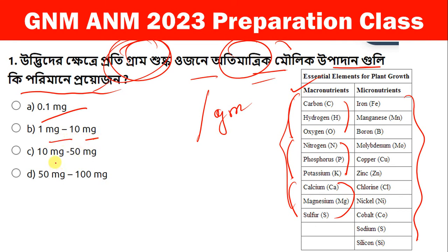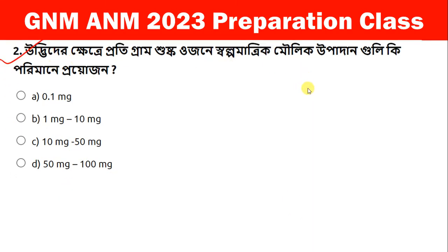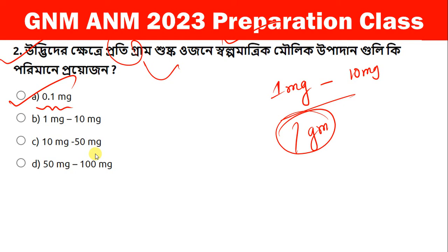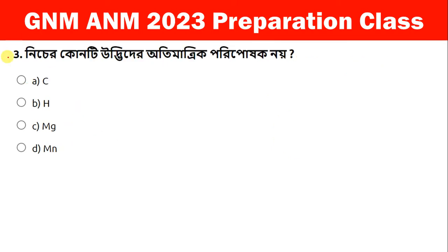Mg at 15 mg. Going through the micronutrient list. Option number A: 0.1 mg. Next, other portions — niche content would be there.